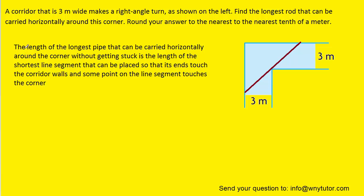Now, it's important to note in this problem that the length of the longest pipe that can be carried horizontally around the corner without getting stuck is actually the length of the shortest line segment that can be placed so that its ends touch the corridor walls and some point on the line segment is touching the corner, which would be this point right here. So in essence, this question is actually asking us to find the shortest line segment.